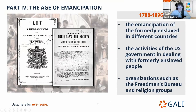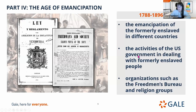Last but not least, we have Part 4, the Age of Emancipation, ranging from 1788 to 1896. This section focuses on the emancipation of the formerly enslaved in different countries, activities of the U.S. government in dealing with the formerly enslaved, and documents from organizations such as the Freedmen's Bureau and different religious groups. We have correspondence, speeches, plays, financial papers, scrapbooks, telegrams, legal documents, diaries, and journals spanning from 1788 with Lord Dunmore's offer of emancipation, ending in 1896 with Plessy v. Ferguson.